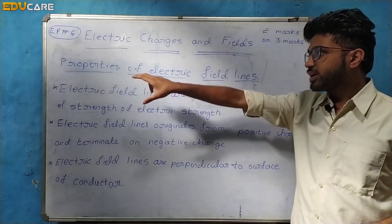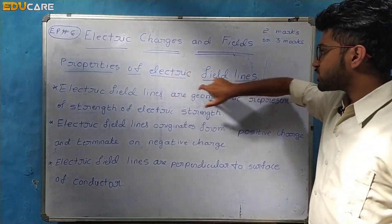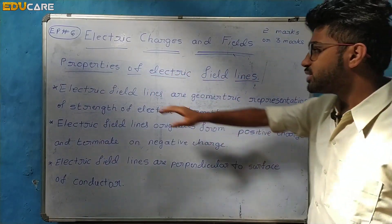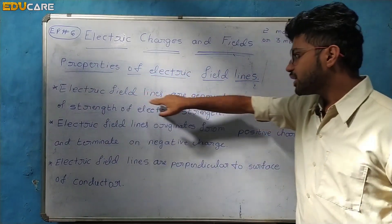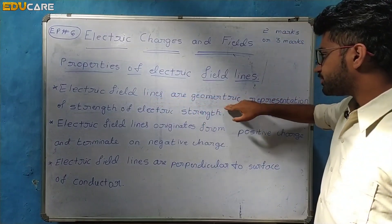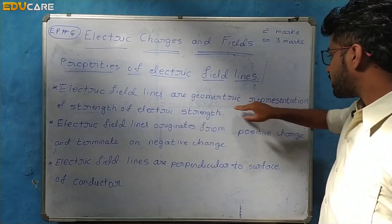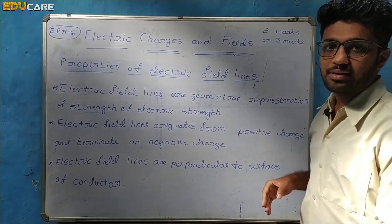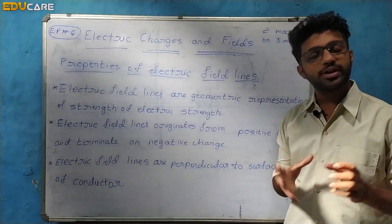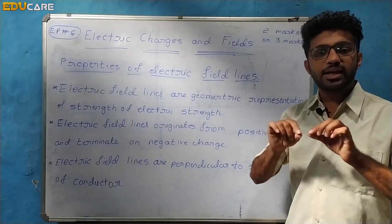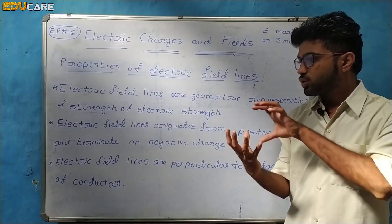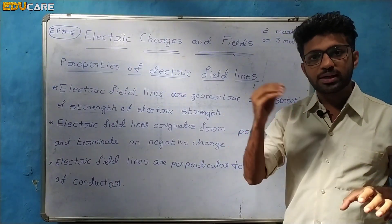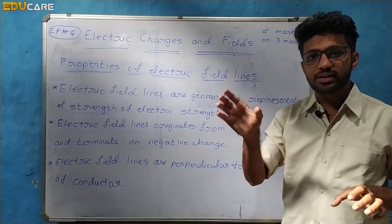Let us discuss now what are the properties of electric field lines. The first one is: electric field lines are a geometrical representation of the strength of the electric field. This represents the strength of the electric field.